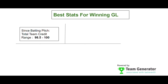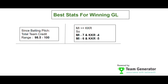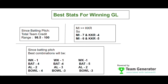Since Mumbai Indians are slightly stronger than KKR, we predict Mumbai Indians will win today. For team partition strategy, we'll go with seven players from Mumbai Indians and four from KKR, and also six from Mumbai Indians and five from KKR. The best team combinations for this balanced pitch are: 1 WK, 4 BAT, 2 AR, 4 BWL; 1 WK, 4 BAT, 3 AR, 3 BWL; and 1 WK, 5 BAT, 2 AR, 3 BWL.